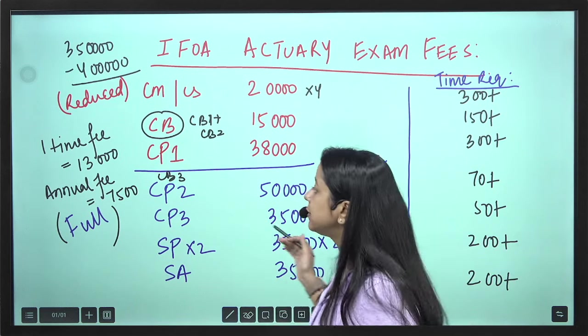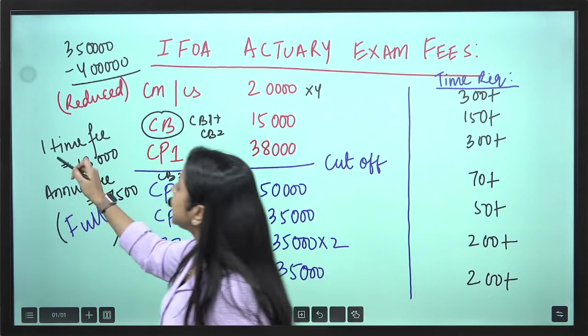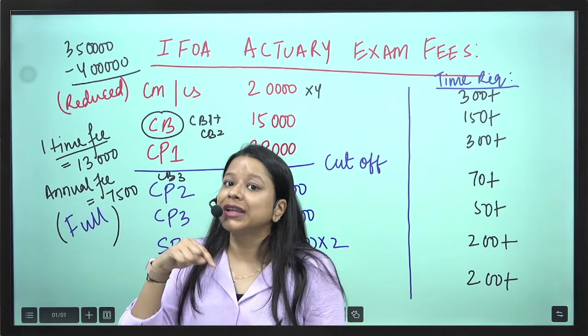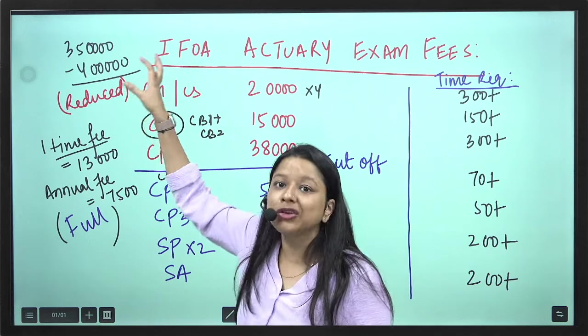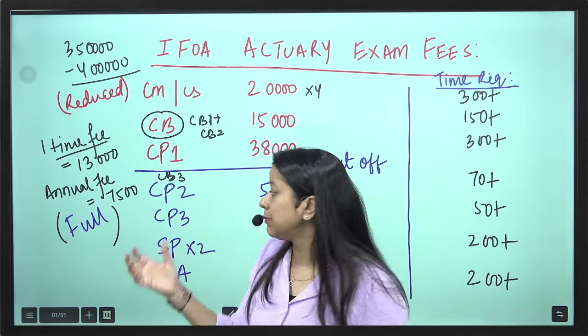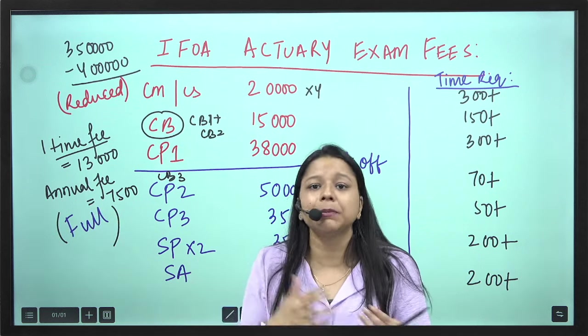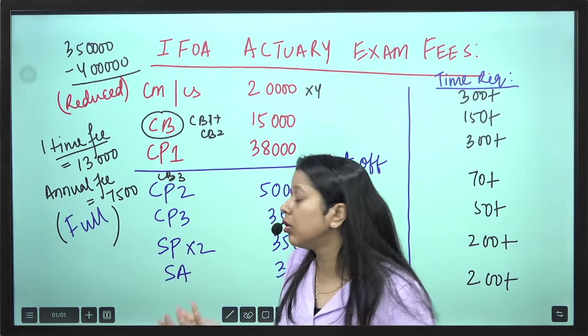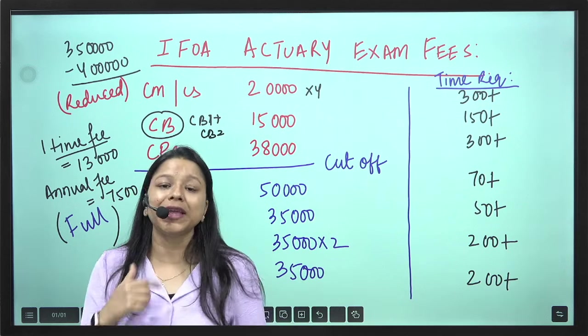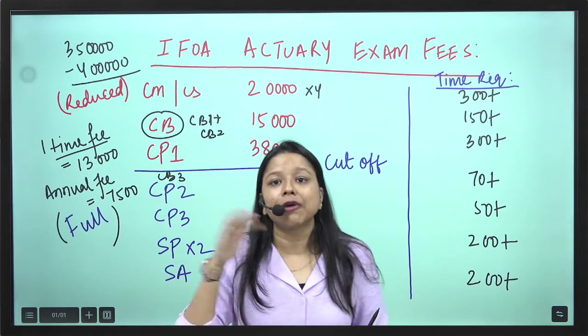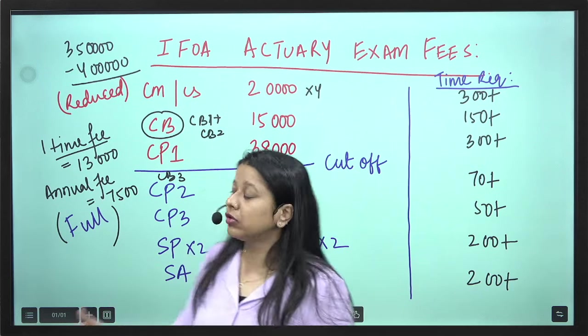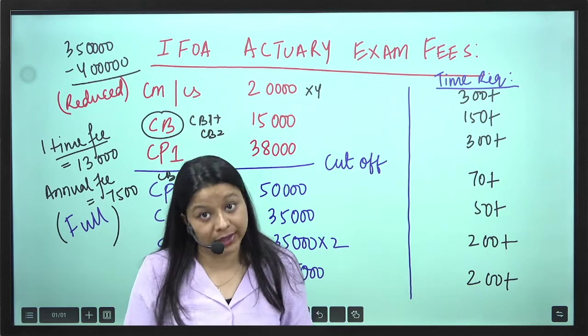And if you are appearing in reduced rate, obviously it will be less. There is a one-time membership fees which is the membership fees you provide at the time of taking membership. That can be after clearing any one CM1 or CS1 paper or it can also be before clearing it whenever you are taking membership. It will be again around Rs 13,000 to Rs 14,000 depending whatever the pounds and INR exchange rate is. Annual fees is Rs 7,500. This you have to pay in October every year after you have taken the membership. This is a renewal fees that you have to pay to IFOA body every year. All of these fees structures are of IFOA.